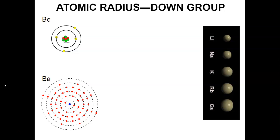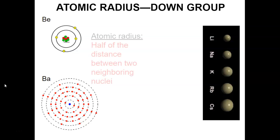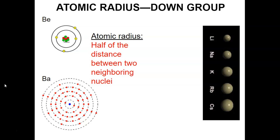Atomic radius is basically just a measure of the size of an atom. Technically, we measure it as half of the distance between two neighboring nuclei, but really it's the radius of an atom.